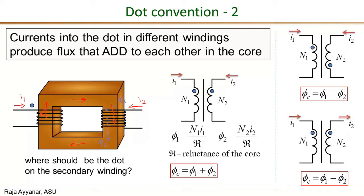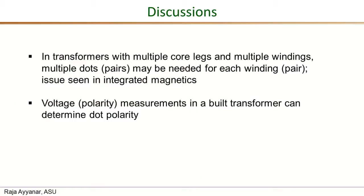We can see that in any part of the core, the flux directions of Φ₂ are aligned with those of Φ₁ — the two fluxes are adding everywhere along the core. This means that if current is entering the dot on the primary side, the current should also have been entering the dot in the secondary winding for the fluxes to add. Therefore, the dot is placed at the top for the secondary winding as well.